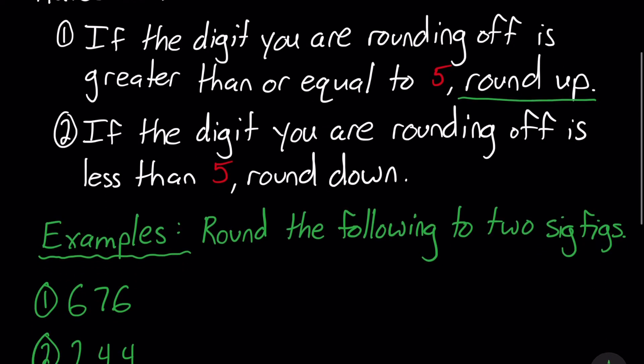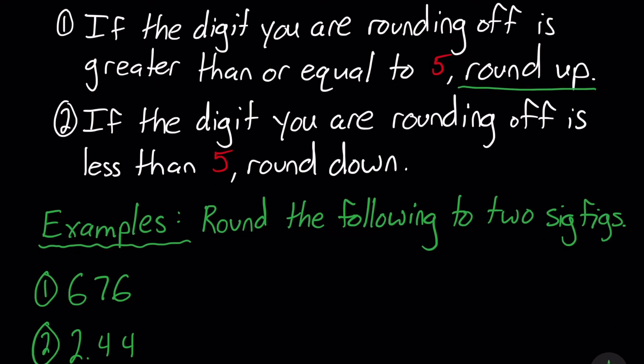And rule two, if the digit you are rounding off is less than 5, round down. You probably guessed it, you will round down.